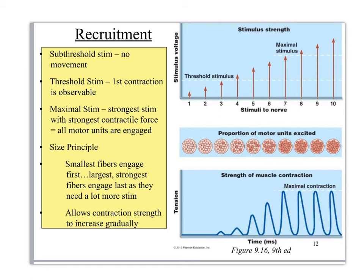There are three different ways of showing recruitment. The first shows the stimulus from the neuron and how much voltage is released relative to threshold. Signals below threshold don't generate a contraction — low, didn't reach threshold; low, didn't reach threshold; almost at threshold but not quite. Once you hit threshold, you can generate a contraction, and the maximal signal gives full engagement.